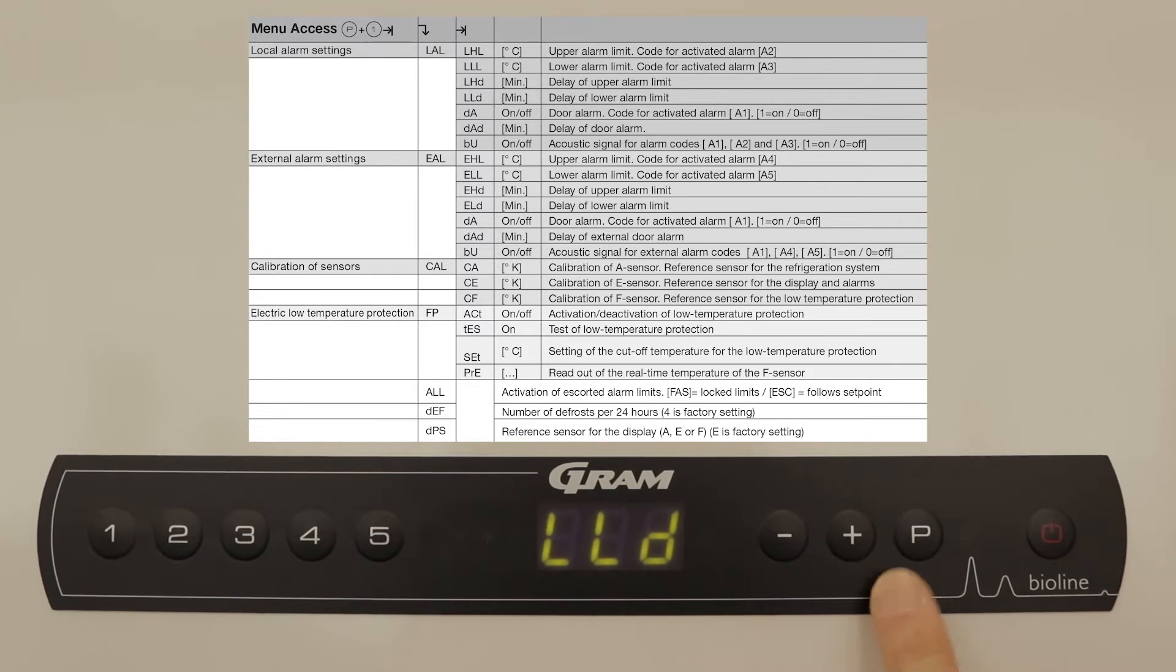Next is the delay of the low alarm limit. We will set this to 5, just like the delay of the upper alarm limit.